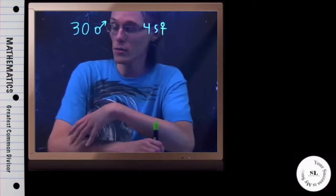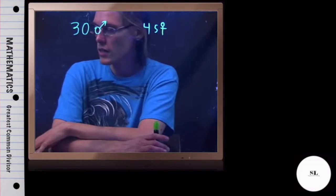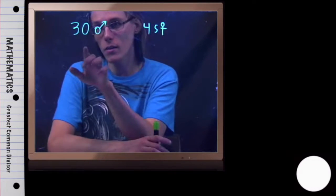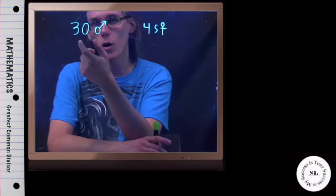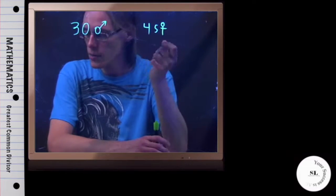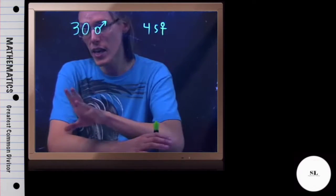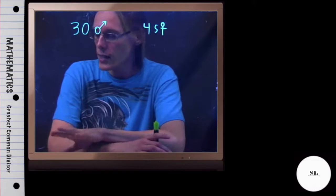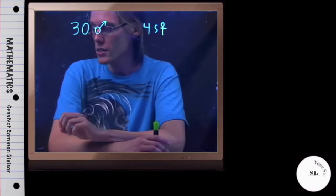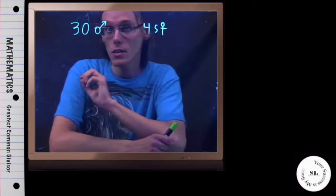In this example, we are told that given an intramural league, we need to divide 30 men and 45 women into all-male and all-female teams so that each team has the same number of people. Then they ask us, what is the largest number of people that can be placed on a team?